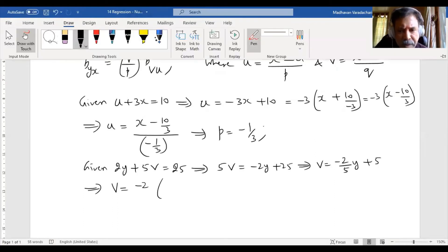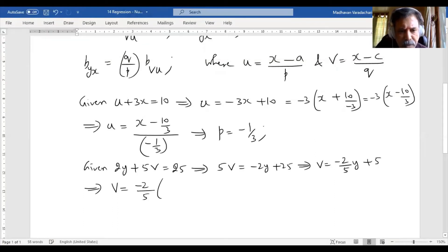You will have negative 2 by 5 outside, so you will have y plus 5 divided by negative 2 by 5. This can be rewritten as minus 2 by 5 times y. This 5 will go to the numerator, so you will have minus 25 by 2.